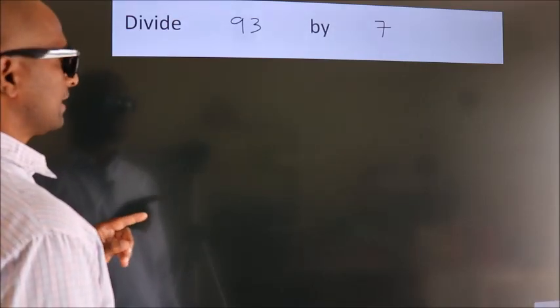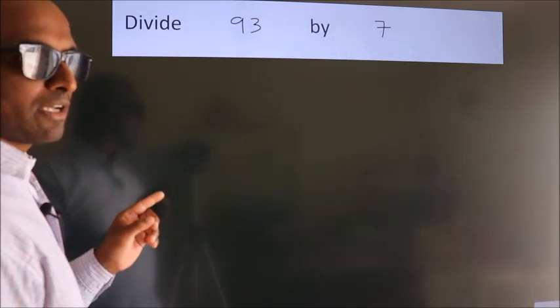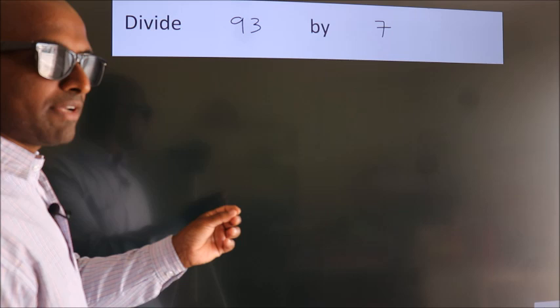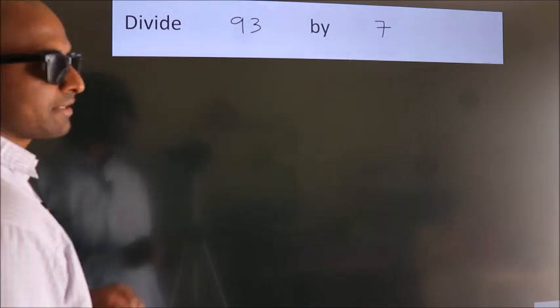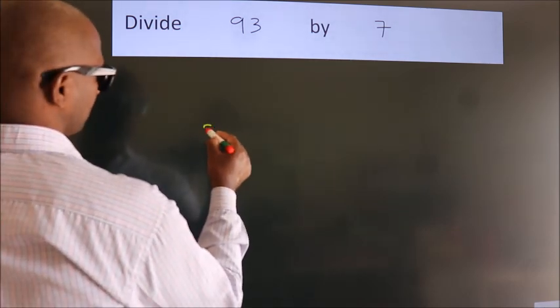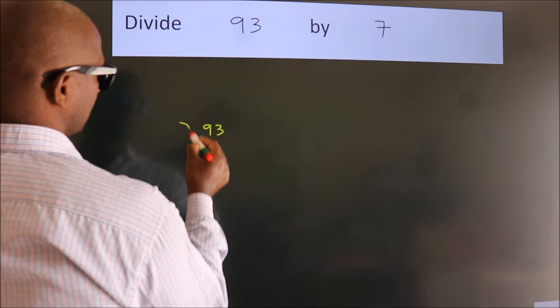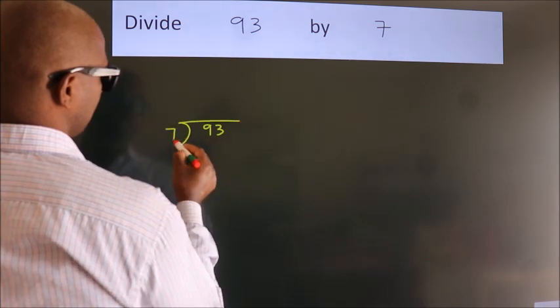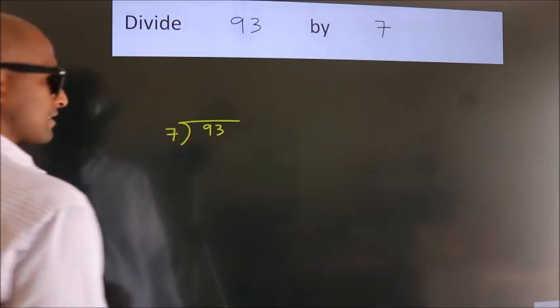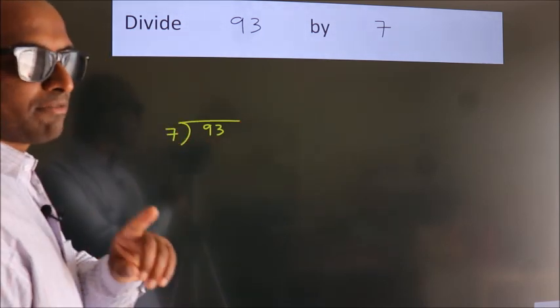Divide 93 by 7. To do this division, we should frame it in this way. 93 here, 7 here. This is your step 1.